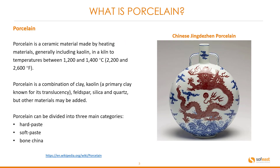So what is porcelain? Porcelain is a ceramic material made by heating materials — generally including kaolin — in a kiln to temperatures between 1200 and 1400 degrees centigrade, or 2200 and 2600 degrees Fahrenheit. Porcelain is a combination of clay or kaolin, a primary clay known for its translucency, feldspar, silica and quartz, but other materials may be added.